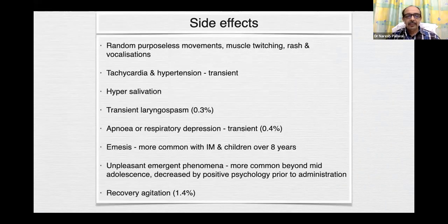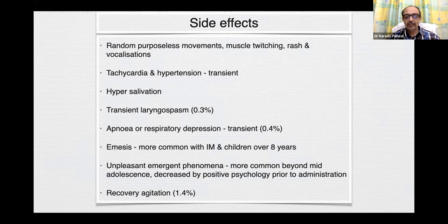Side effects of ketamine: random purposeless movements, muscle twitching, rash and vocalizations, tachycardia, hypertension. Hypersalivation can occur, transient laryngospasm can occur, and apnea or respiratory depression is usually transient. Emesis is more common with intramuscular use and in children over 8 years. Unpleasant emergence phenomena can occur, more common beyond mid-adolescence, and can be decreased by positive psychology prior to administration — you can counsel the child and take him to a pleasant mental state. Recovery agitation is common in 1.4% of kids.